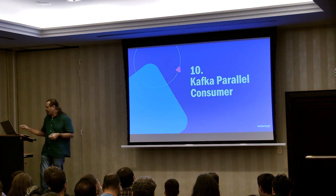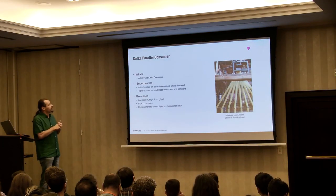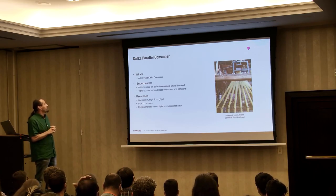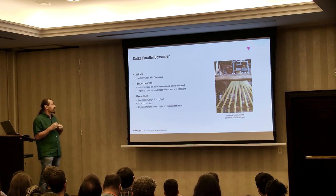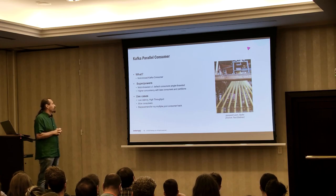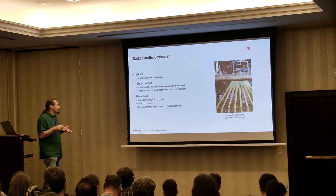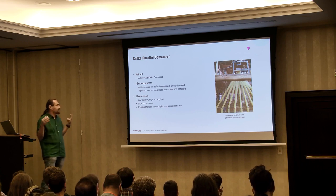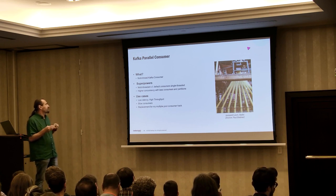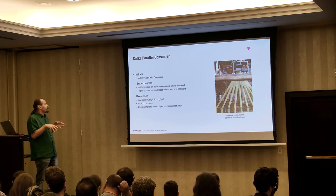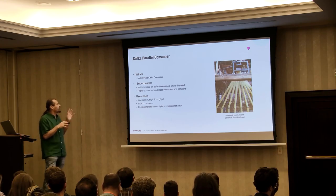Number ten: the Kafka Parallel Consumer. It's not really an official part of the Kafka distribution but it's a useful client — a multi-threaded Kafka consumer. Its main ability is to have multi-threaded clients compared to the default single-threaded consumers, giving higher concurrency with fewer consumers and partitions. It's really great for low-latency, high-throughput clients where you have intrinsically slow consumers communicating with some back-end system. Previously I used multiple thread hacks in consumers, but you don't have to do that anymore.